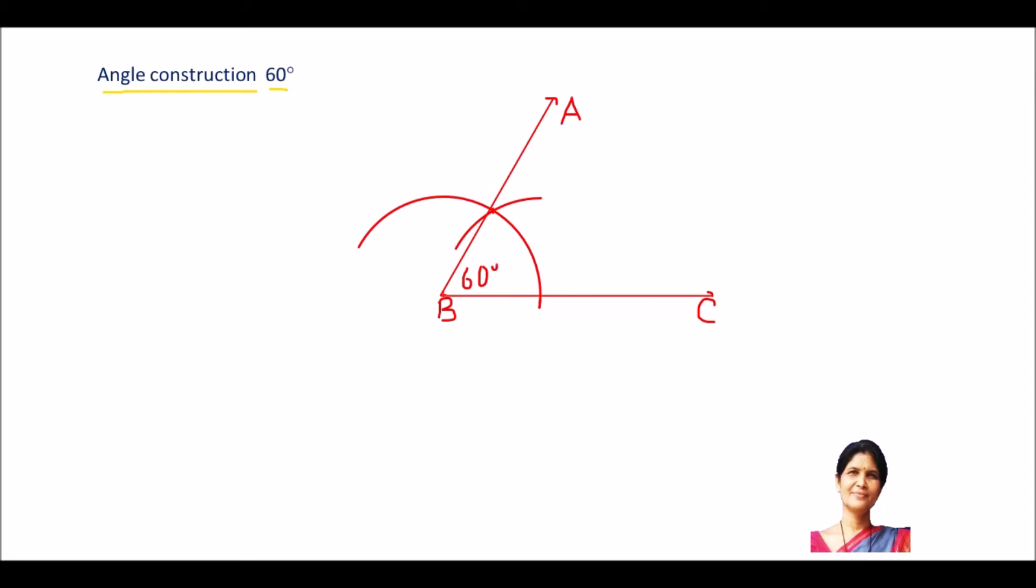Now, how I will prove that it is 60 degree? I can prove because I can measure with a protractor. I can verify. So, this is the protractor. I will take the protractor and how to measure the angle. I will put the center or middle of the protractor on the vertex exactly on B.